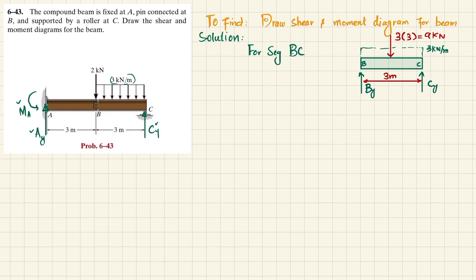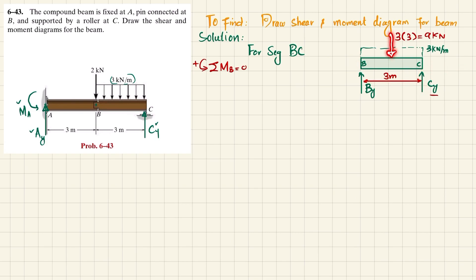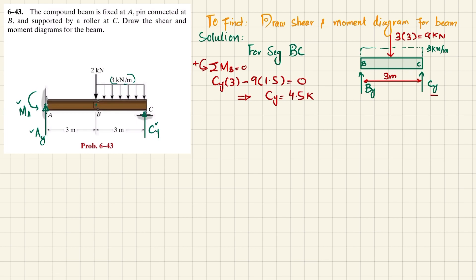Applying equilibrium: the sum of all moments about point B equals zero, taking counterclockwise as positive. C_Y times 3 (counterclockwise, positive) minus 9 times 1.5 (clockwise, negative) equals zero. Therefore C_Y × 3 − 9 × 1.5 = 0, giving C_Y = 4.5 kN.